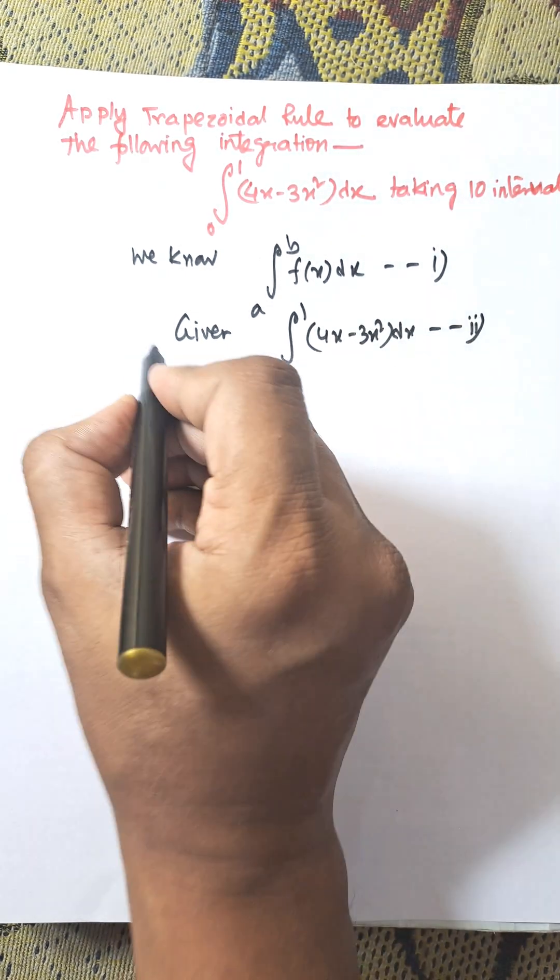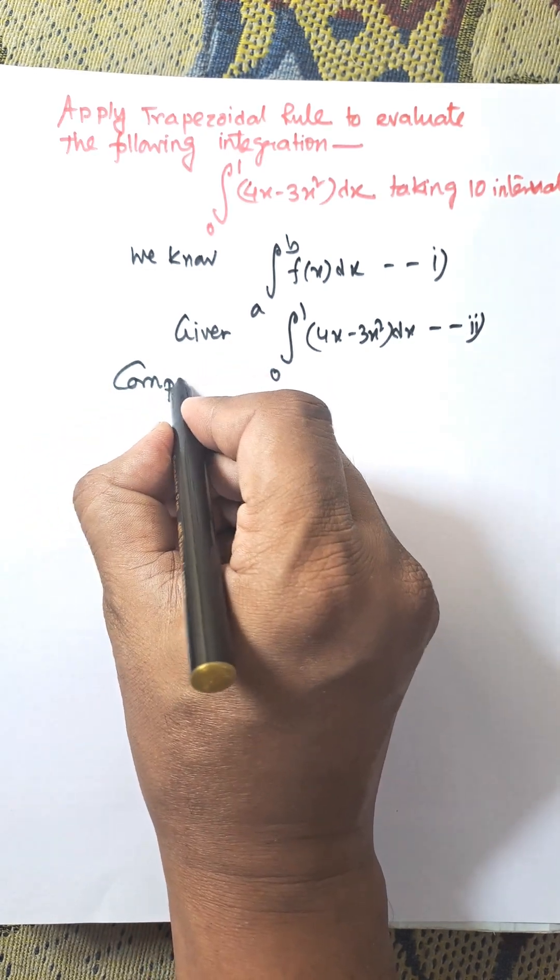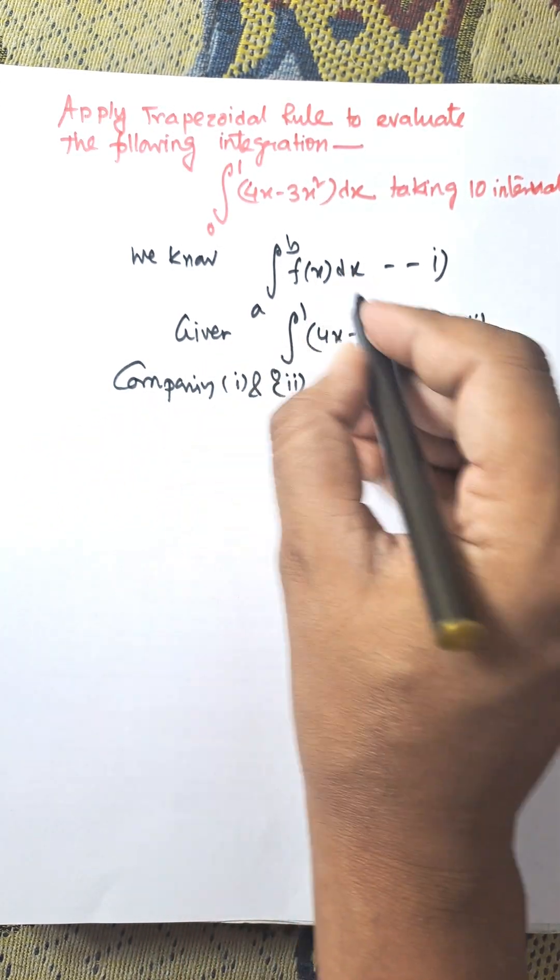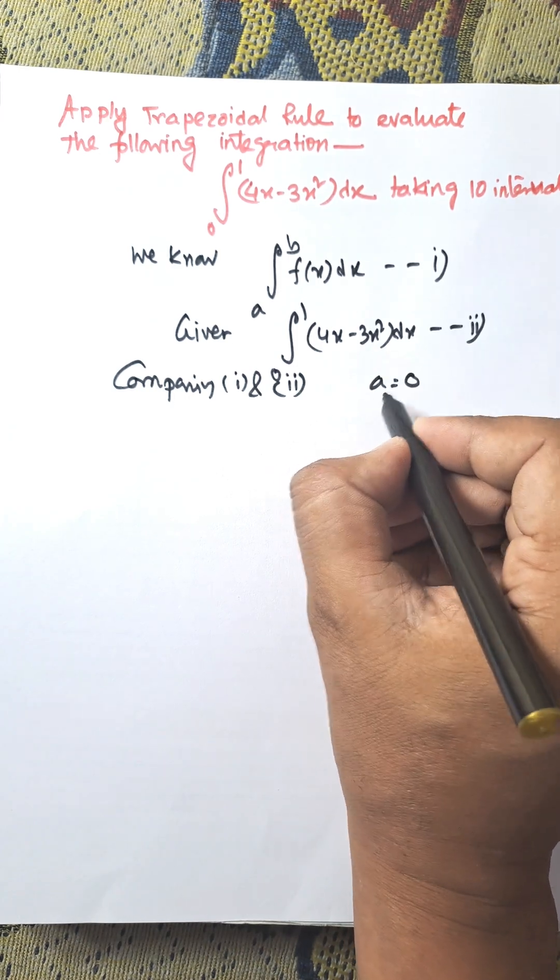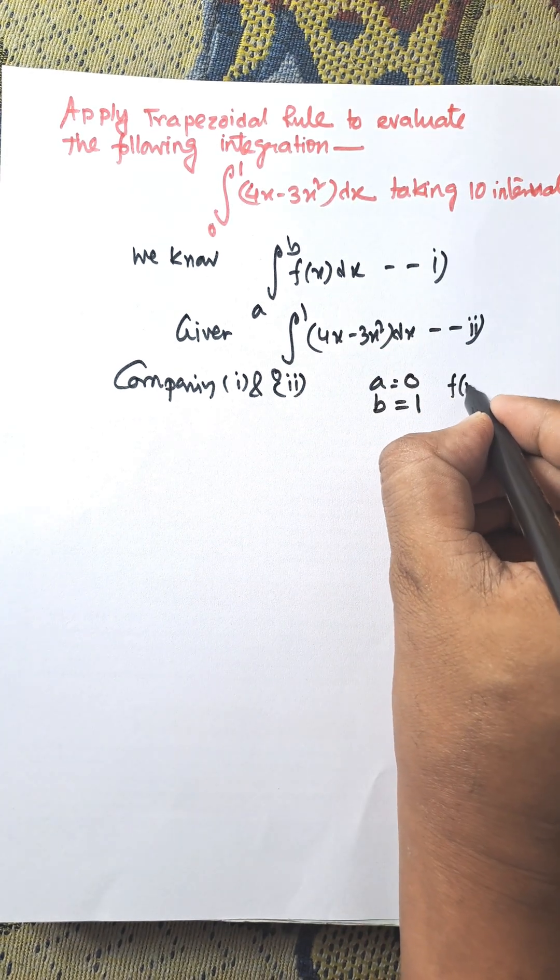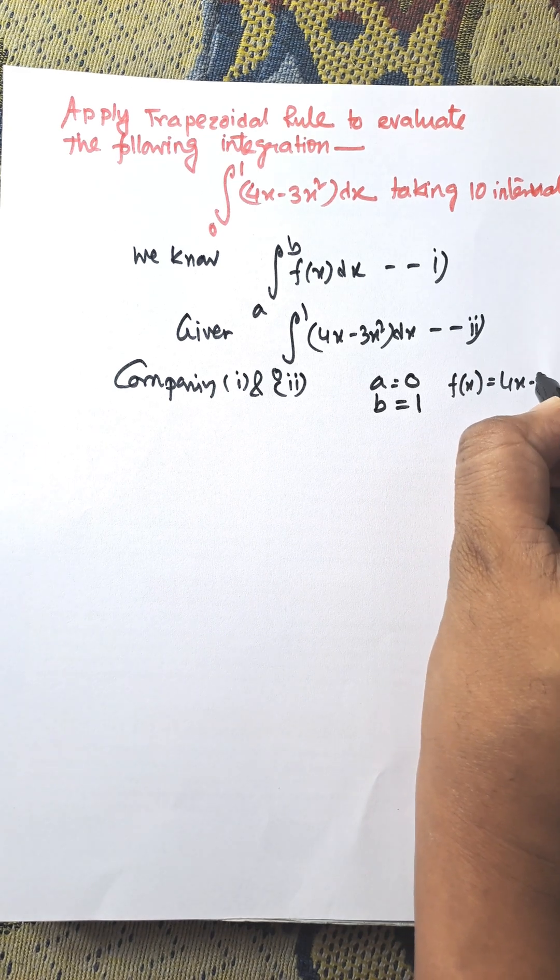Comparing equations one and two, we get: lower limit a = 0, upper limit b = 1, and f(x) is the function 4x - 3x².